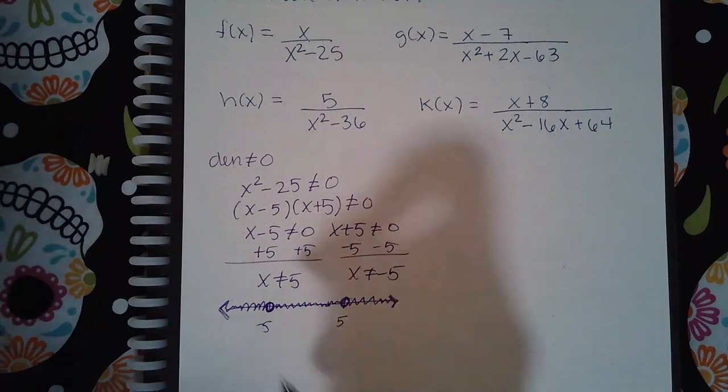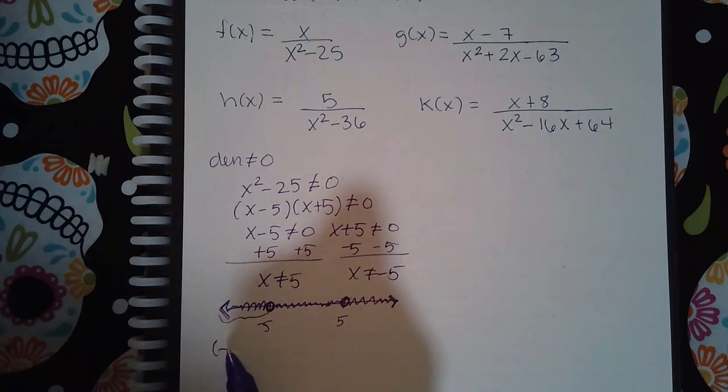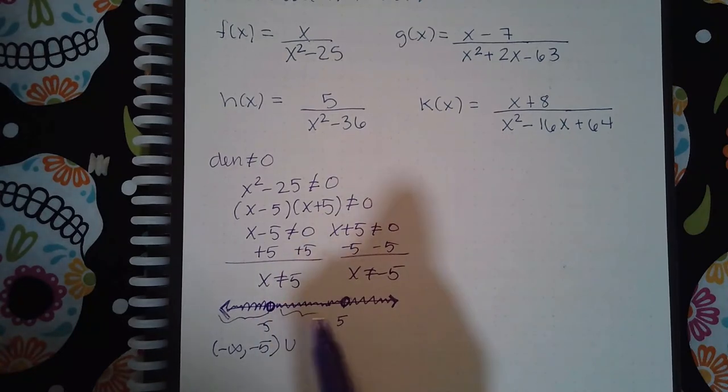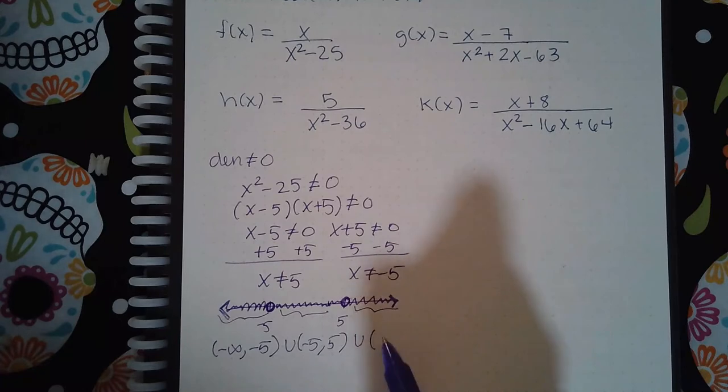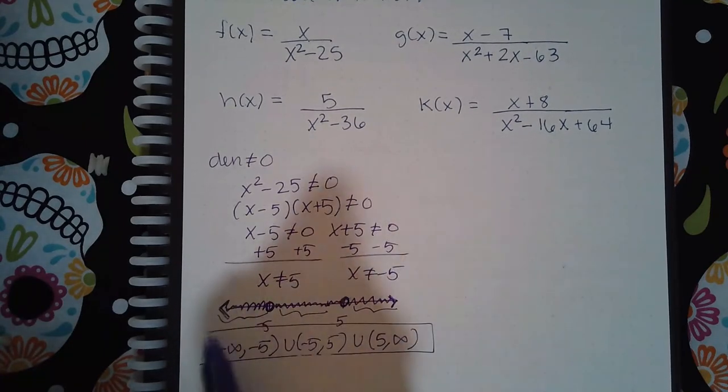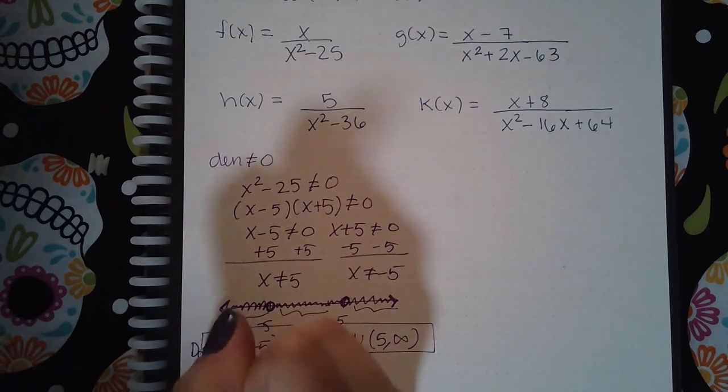So how do I write this in interval notation? Well, this section here will be written as negative infinity to negative five. And since I cannot equal negative five, it'll be a parentheses. The middle section will be negative five to five. Again, not equal, so parentheses. And then the last section would be five to infinity. And so this is the interval notation for the domain of f.